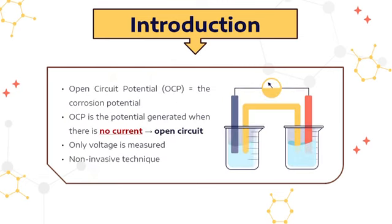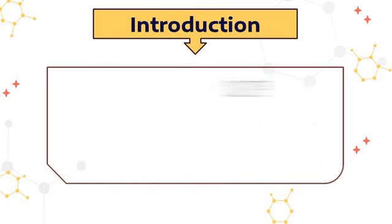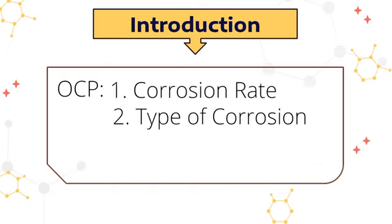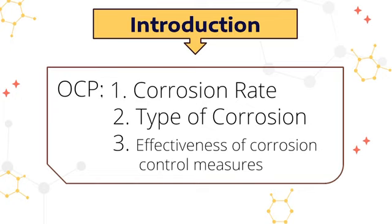Measuring the OCP is non-invasive because no current flows. From OCP, the corrosion rate, type of corrosion, and the effectiveness of corrosion control measures can be determined.